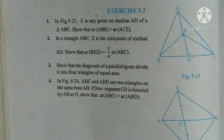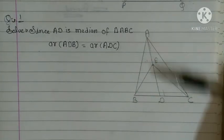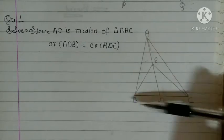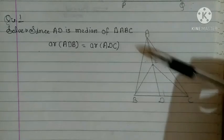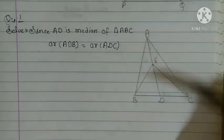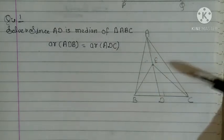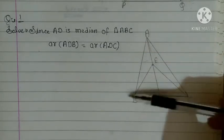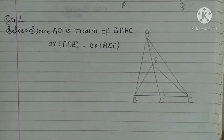Yehaan aap dhekhen ki AD joh hai, haemko given hai, AD joh hai, woh median hai triangle ABC ka. Ab jab triangle ABC ka yhe median hai, to ADB aur ADC dhono triangle ka area kya hooga? Equal hooga. Yeh humme pichlue theorems mein pad chukhe hai, yeh triangle ke anndar dhekhen, dho triangle ban raha hai, ADB aur ADC, to dhono ka area equal hooga.